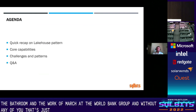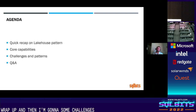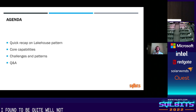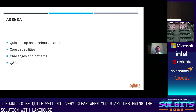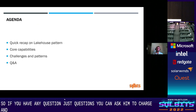The agenda for today: I want to quickly wrap up what the lighthouse pattern is, what it means, what are its core capabilities. Then I'm going to cover some challenges and patterns that throughout my journey implementing lakehouses in Azure I found to be quite unclear when you start designing a solution. Questions — I prefer we cover them at the end, so either ask them in the chat, or keep them for the last five or six minutes of today's presentation.